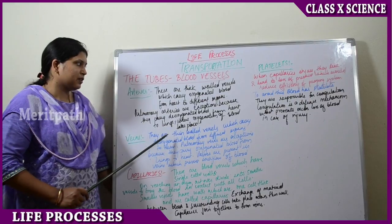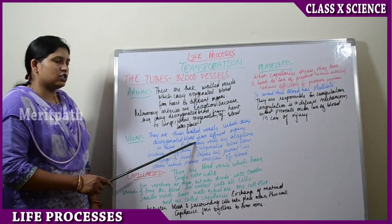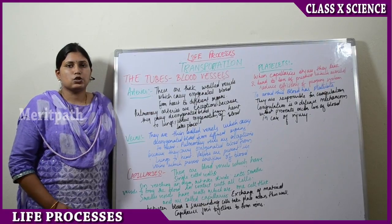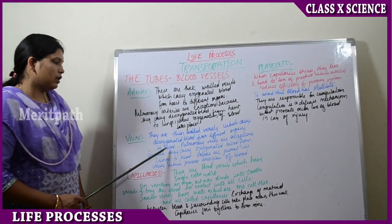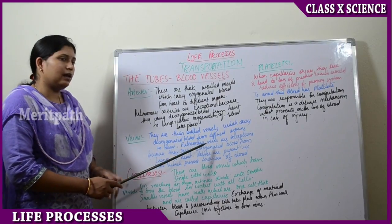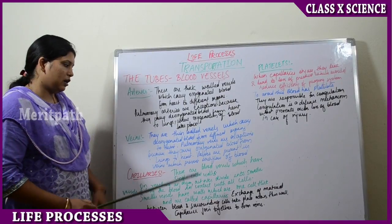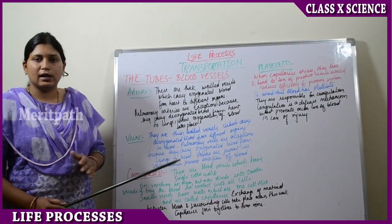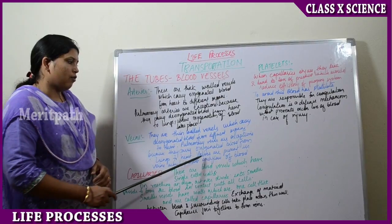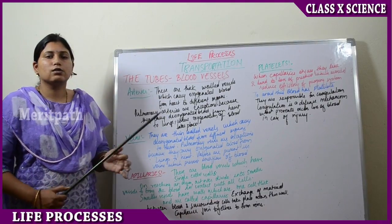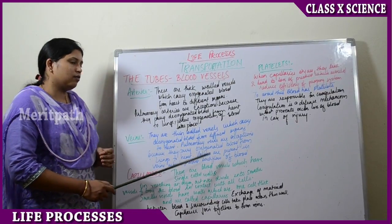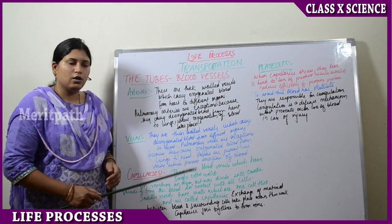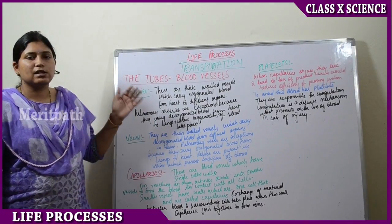Veins are thin-walled blood vessels which carry deoxygenated blood from different organs to the heart. Pulmonary veins are exceptions because they carry oxygenated blood from the lungs to the heart. Valves are present in the veins to ensure there is no backflow of blood.